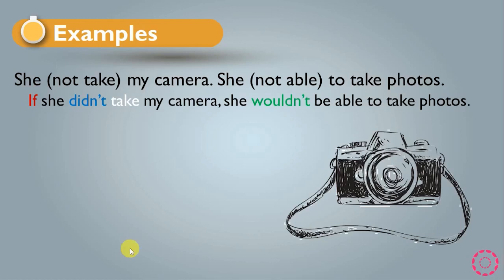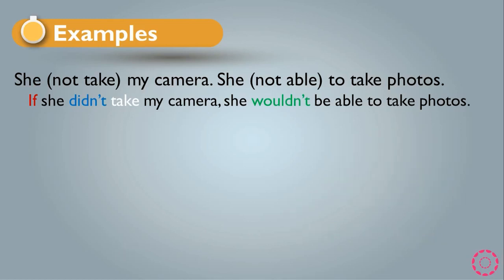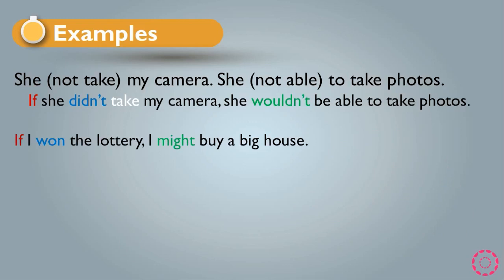Another example: 'If I won the lottery, I might buy a big house.' This is something impossible or imaginary. 'Won' is the past simple of 'win,' and 'the lottery' is the complement. Then 'I' is the subject, 'might' is the second conditional modal, and 'buy a big house' is the complement.